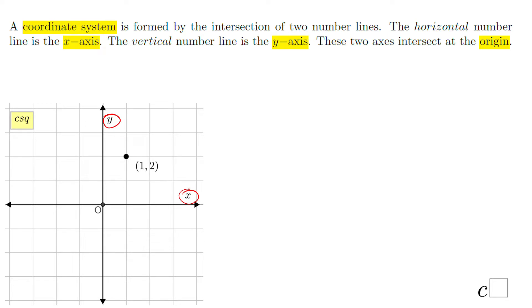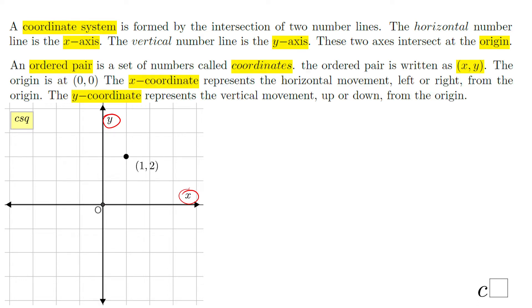These two intersect at this point, which is called the origin, point O. Point O has the coordinates 0 and 0.